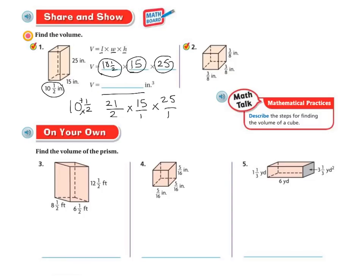I'm going to multiply them all the way across. And then I'm probably going to have to, let me do that really fast. So 21 times 15 is 315, and then times 25 is 7,875. And then on my bottom, I have 2 times 1, which is 2, times 1, which is 2.